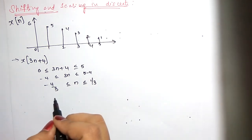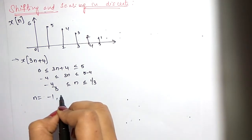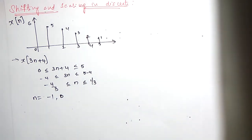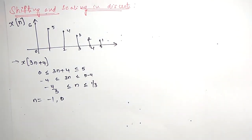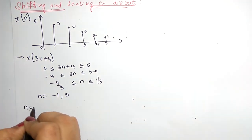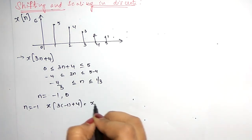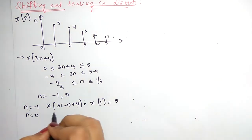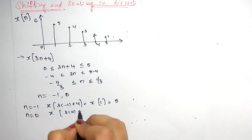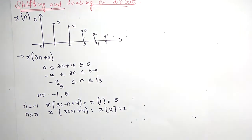We have to take only integer values, so we'll get n equals minus 1 and 0. Those are the only values where you can get the output. At n equal to minus 1, x of 3 times minus 1 plus 4 equals x of 1, and the value is 5. At n equal to 0, it is x of 3 times 0 plus 4 which is x of 4, and the value is 2.